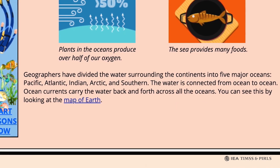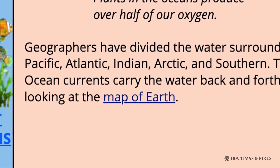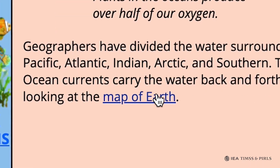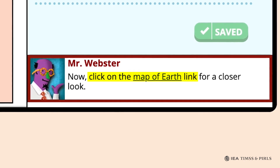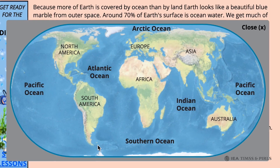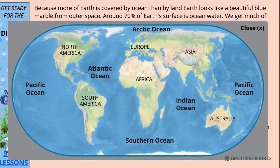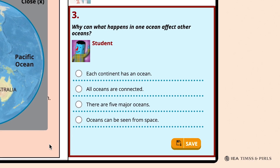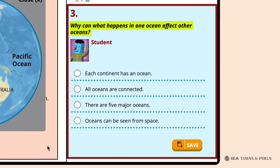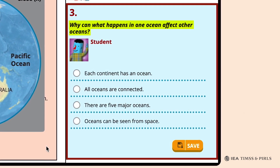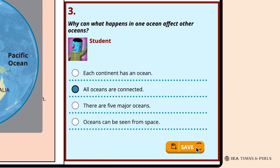The text at the bottom of the webpage explains that the oceans are connected, and provides a link to a map of Earth showing this. Mr. Webster asks students to click on the link to take a closer look. The map shows Earth's continents and how they're surrounded by the five oceans. In Question 3, Mr. Webster asks, 'Why can what happens in one ocean affect other oceans?' Students should select 'All Oceans Are Connected.'